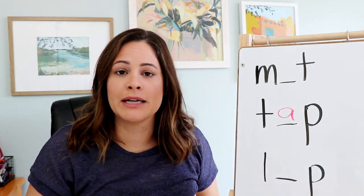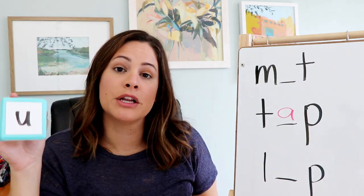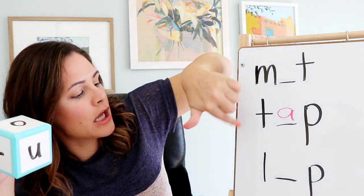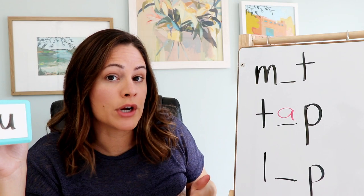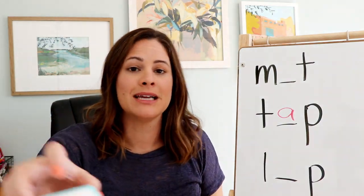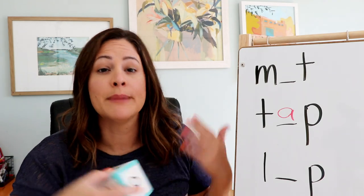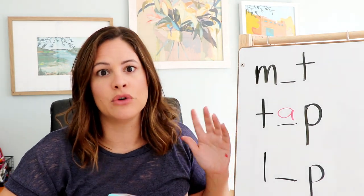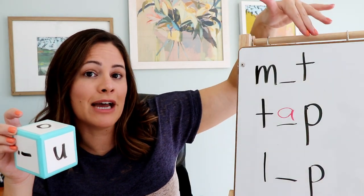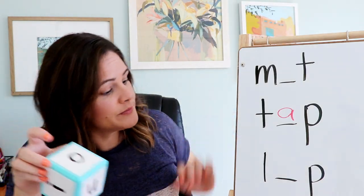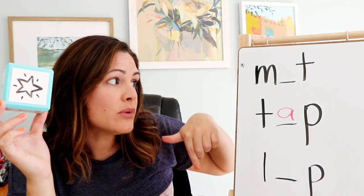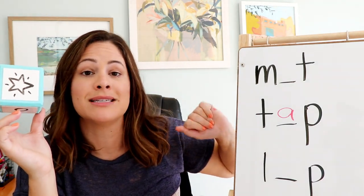Then students pass the dice to somebody else. This time I got a U, and I could look and say M-U-T, L-U-P — neither of those work. As the teacher, you can decide they can either roll again or just pass the dice, because realistically for that warm-up they've already done exactly what you want them to do. They put the vowel in the middle, blended it together, and saw that it makes a nonsense word, not a real one. And of course the star is wild — if they roll a star, they get to choose any word and figure out the vowel that goes inside.